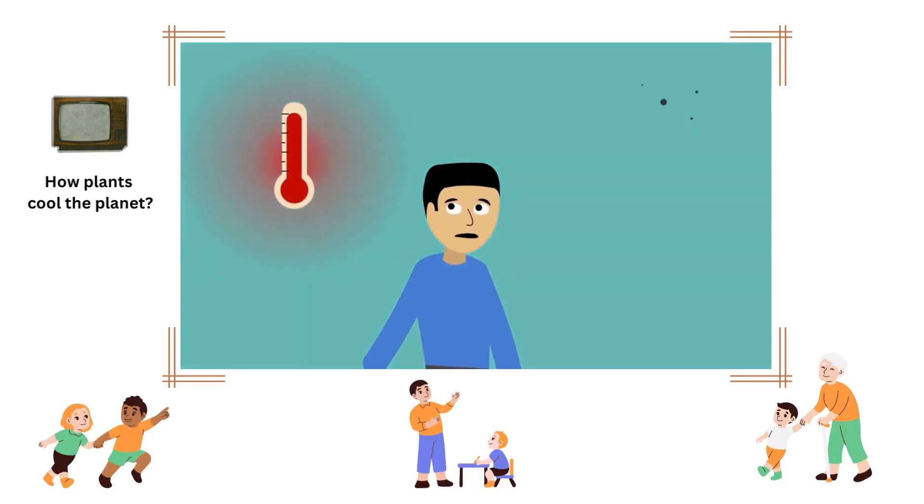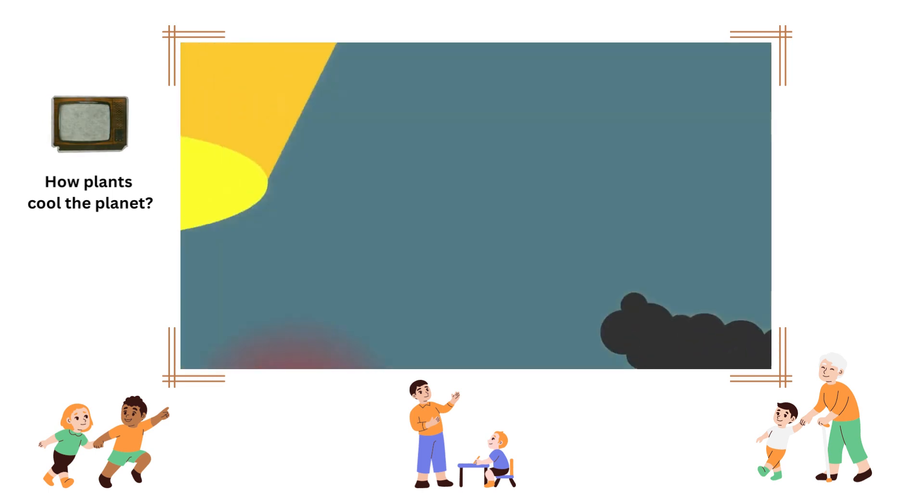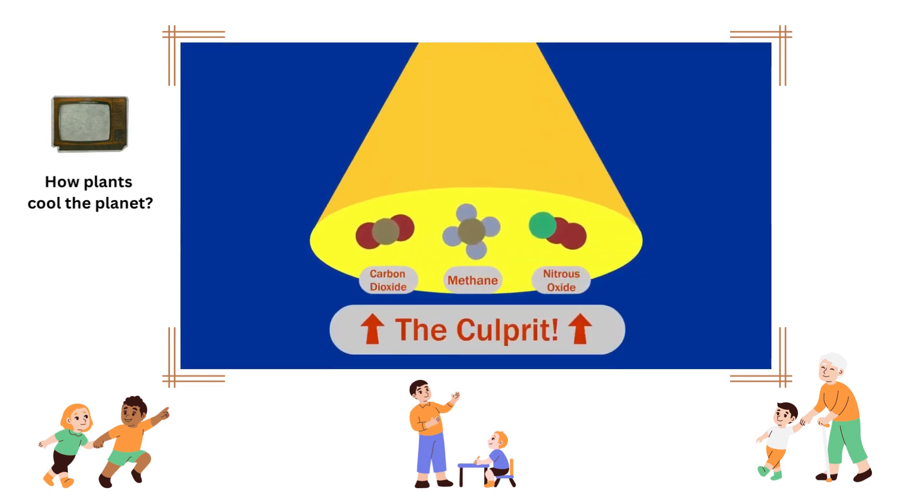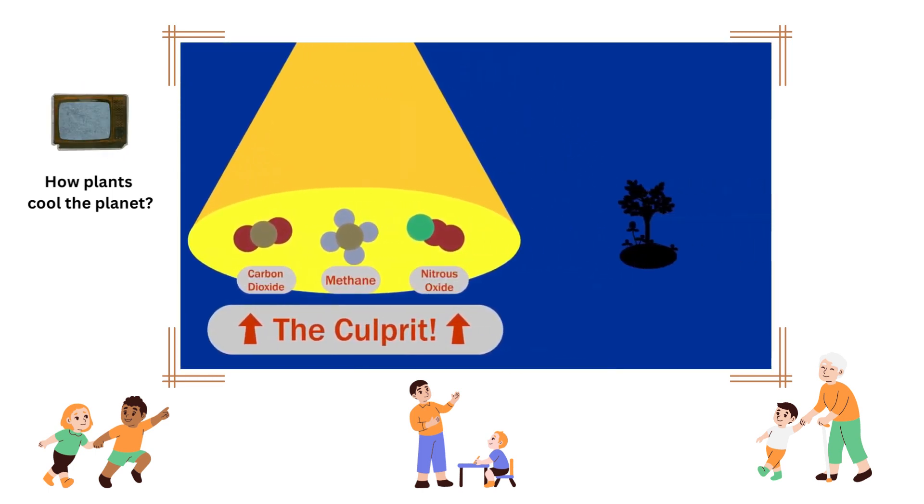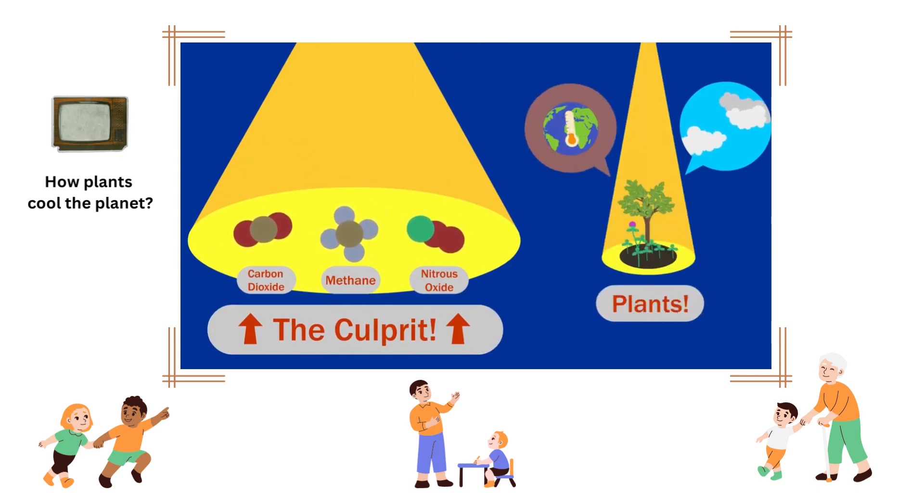In a time of rising temperatures and climate instability, most of the attention goes to greenhouse gases. But there is another way, often overlooked, to stabilize the climate and cool the planet. Plants.